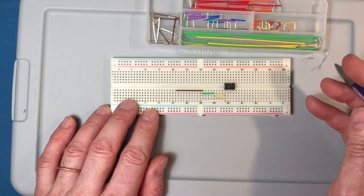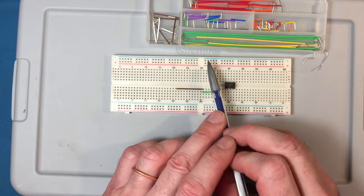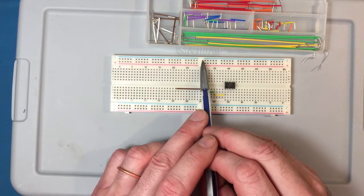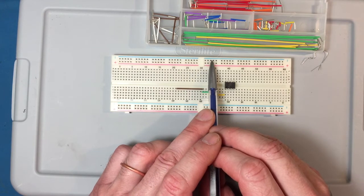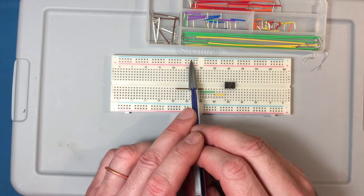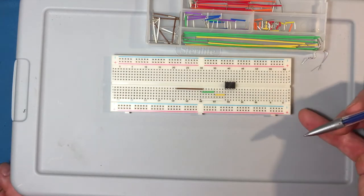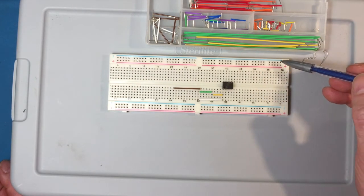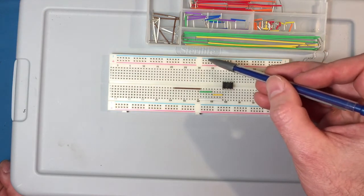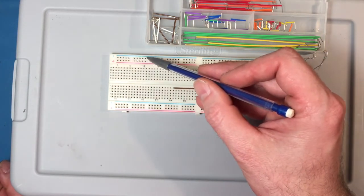So one thing to beware of is that on some breadboards, probably about a third of them, there's no connection from this bus over here to the bus on the other side. And the only real way to figure that out is to check it with a multimeter, which you'll do in the lab. That'll tell you if there's an electrical connection between this blue bus and this one over here.